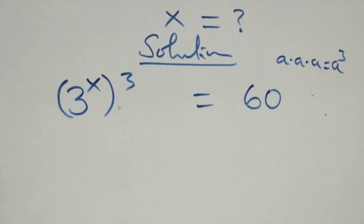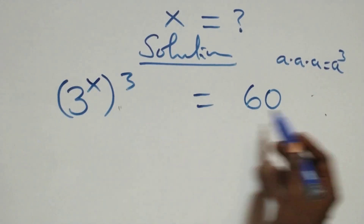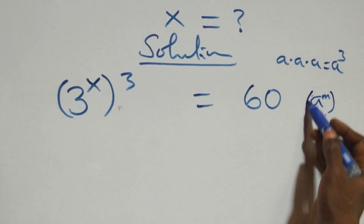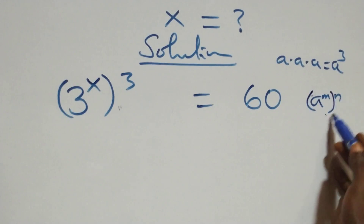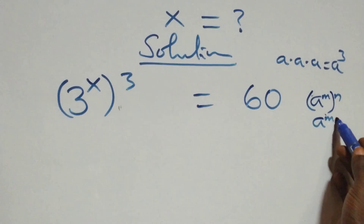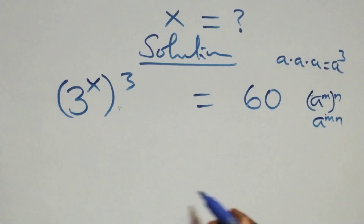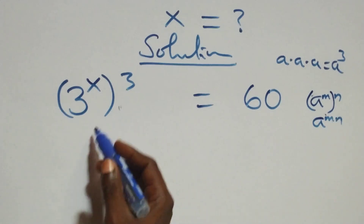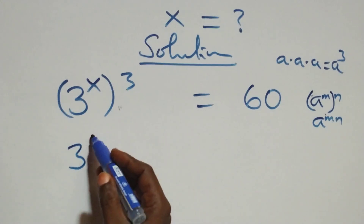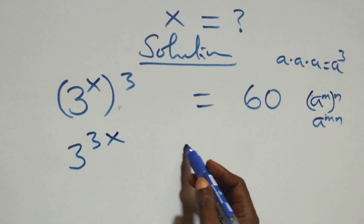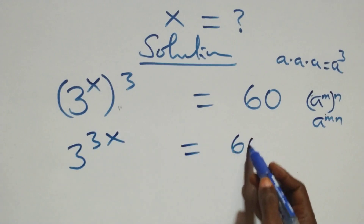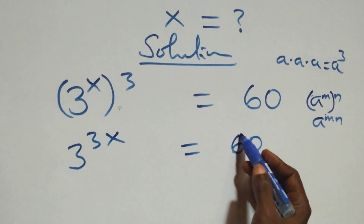The next step: this follows when we have a raised to power m times a raised to power m, which is the same thing as a raised to power m plus m. The powers multiply, and we have three raised to power three x equals sixty on this side.